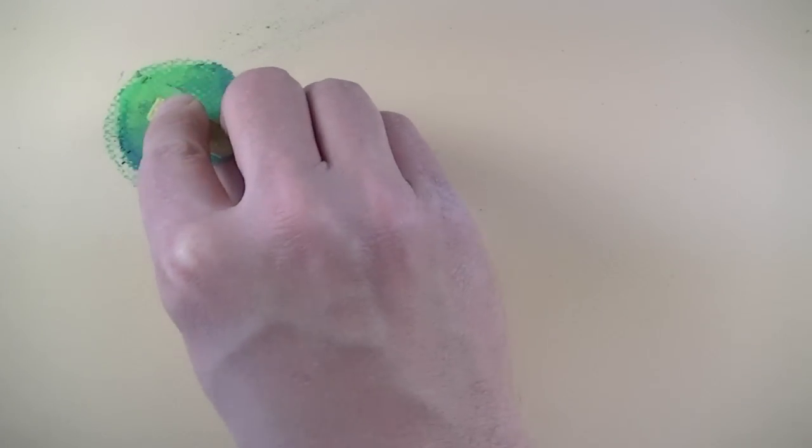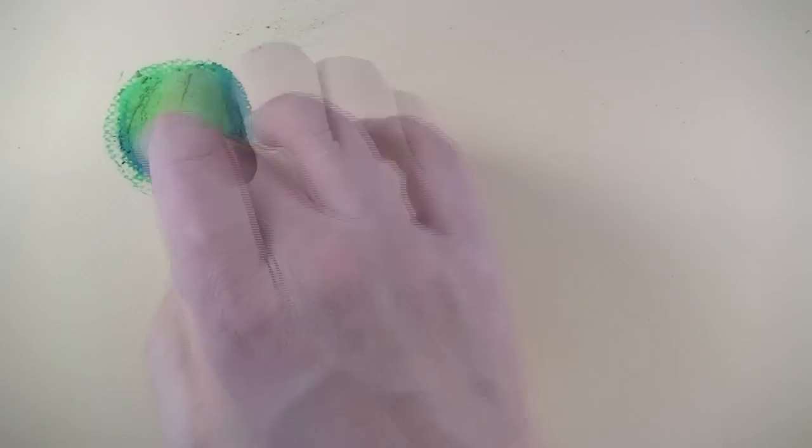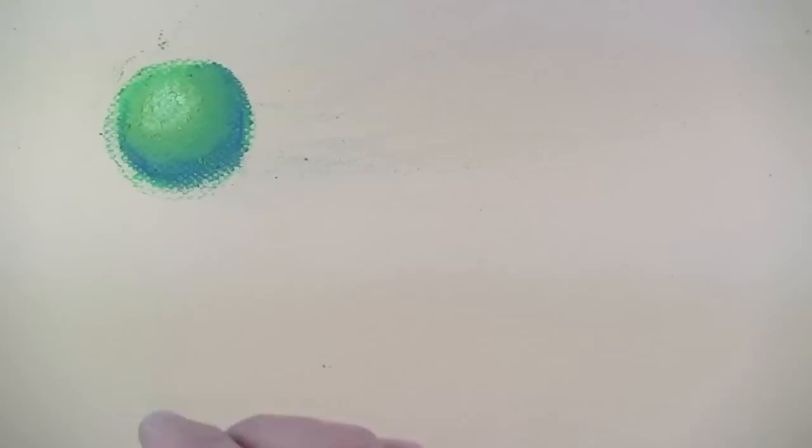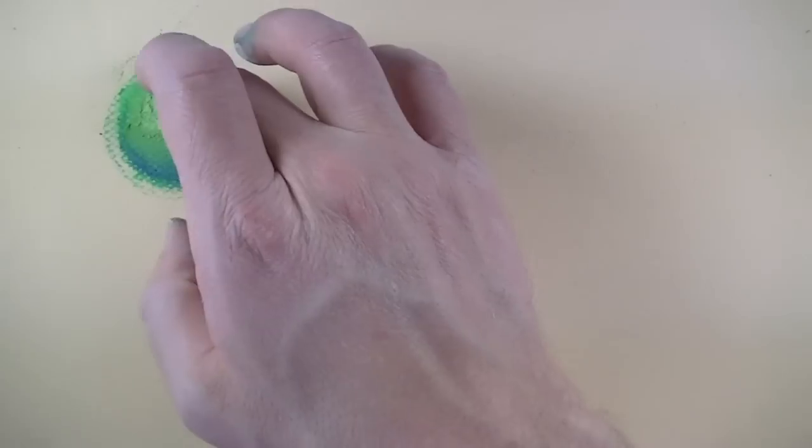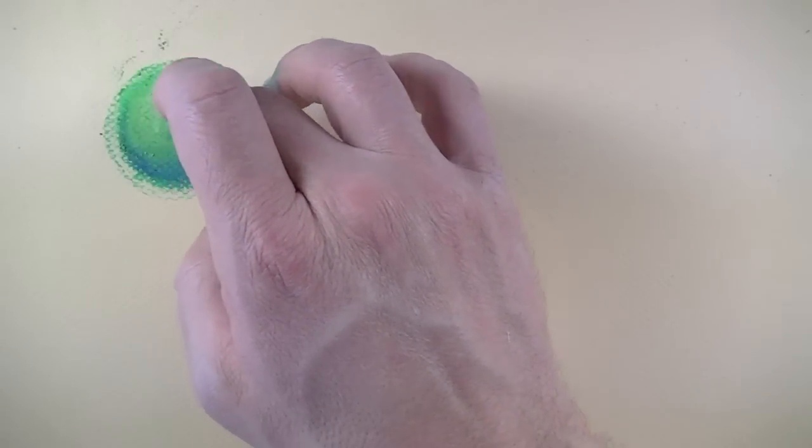Next I'll use a yellow to begin to establish some of the highlighted areas. Each application I use my finger to smear and blend the transitions. I'll add a bit of white for the highlighted area and gently again blend that transition.